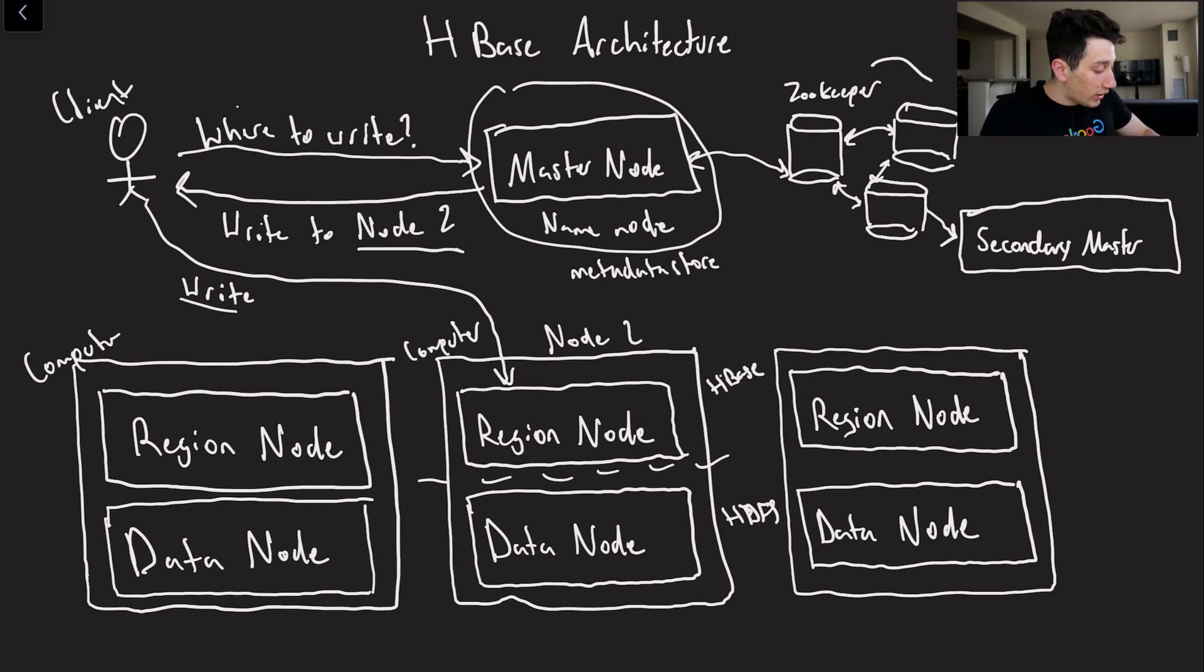Then of course we've got all of our high availability stuff over here, because of course if the master node goes down we don't want to have the entire system go down. So what we typically will do is we'll send all of the operations that are occurring on the master node over to zookeeper.